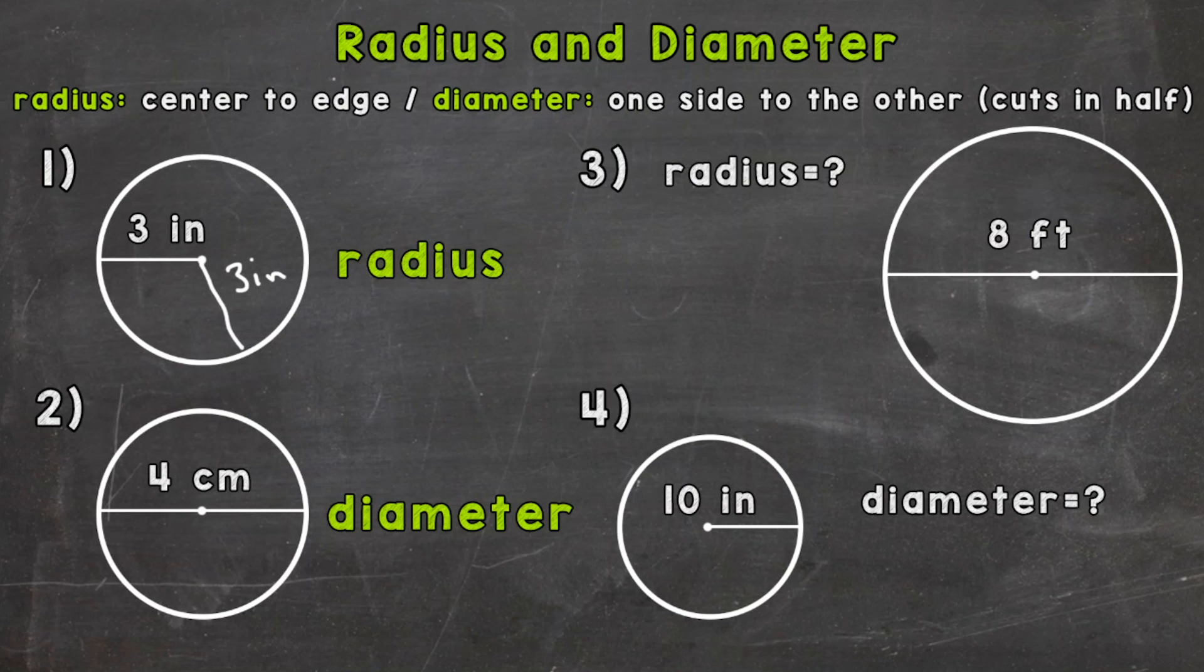For number two, we have diameter. Diameter is a straight line from one side of the circle to the other, and it has to pass through the center of the circle. It cuts it perfectly in half. For number two, we have a diameter of four centimeters, so it's four centimeters all the way across that circle.